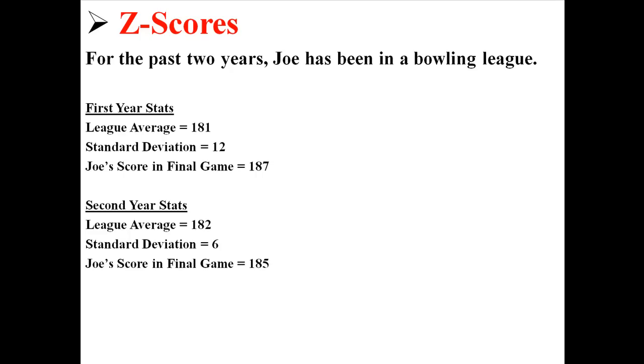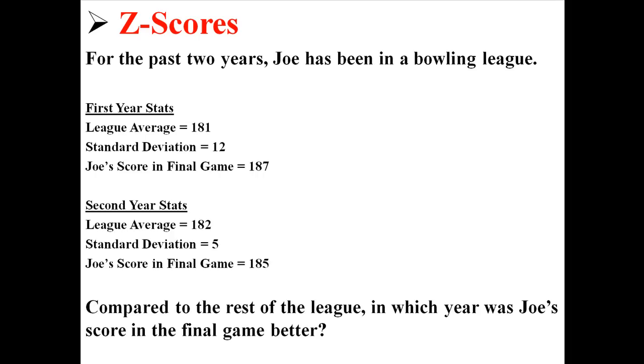Now in the second year, the league average was 182, standard deviation was 6, and Joe's score in the final game was 185. Now obviously in the first year, his score in the final game is higher than it was in the second year. But what I want to know is, compared to the rest of the league, in which year was Joe's score in the final game better?